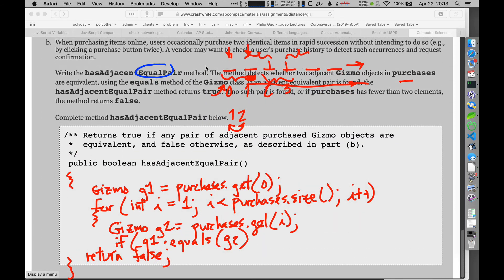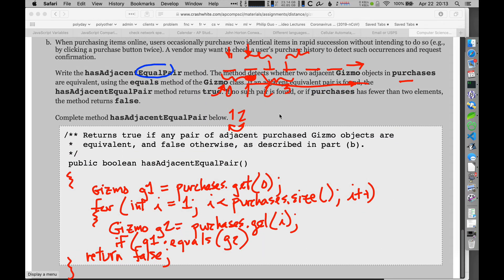So because of that, I'm allowed to use that dot equals there. Cool. Well, let me run back down here then and keep on going. So if those two are equal to each other, if g1 equals g2, then what I'm going to do, and I'm going to just crunch it in here, is I'm going to return true.